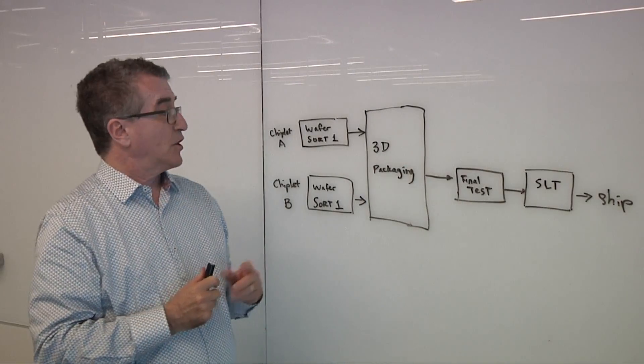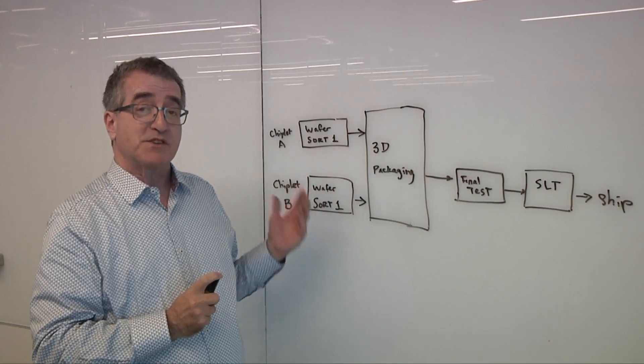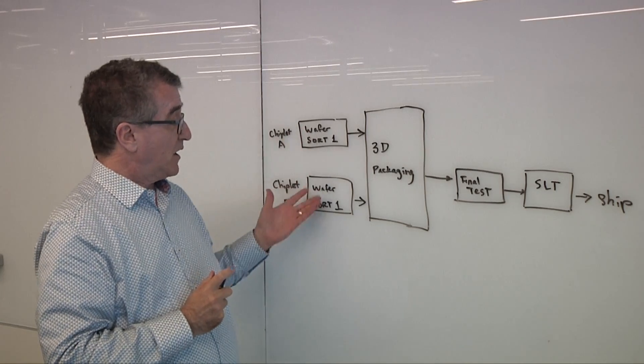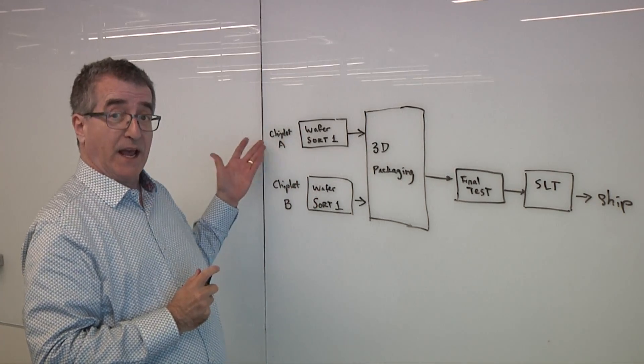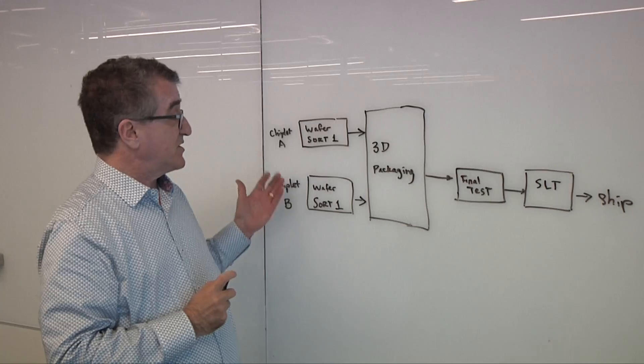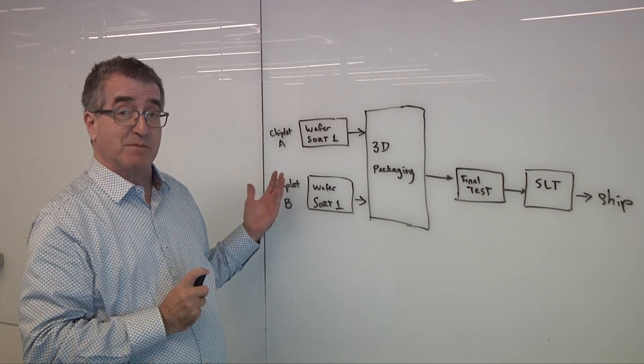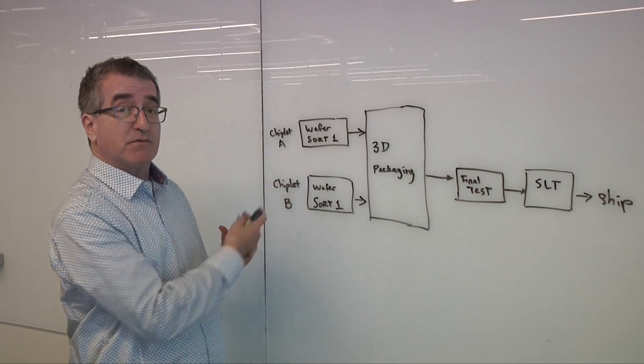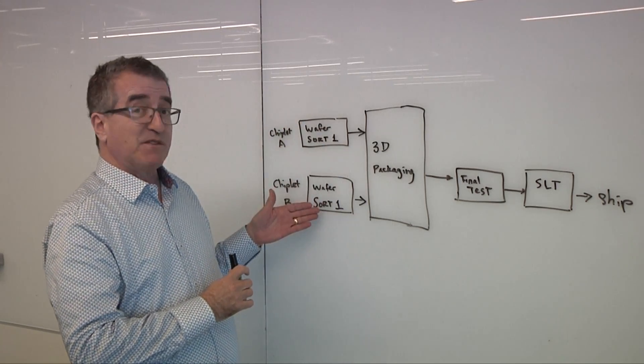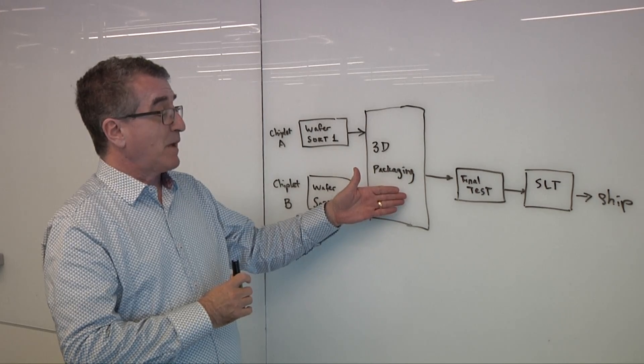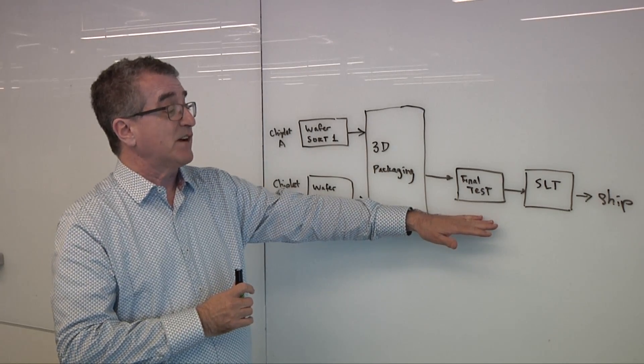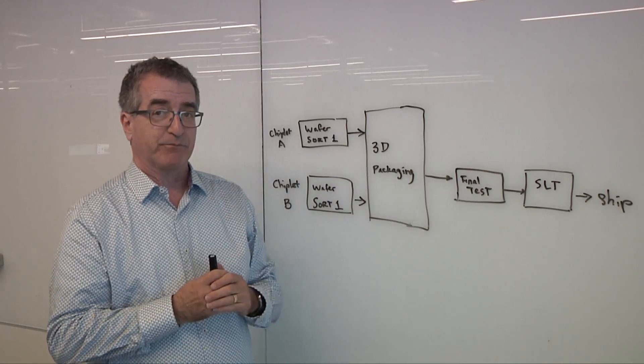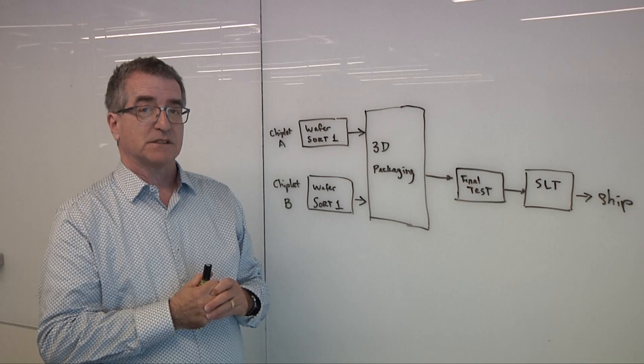Mark, what are we looking at? We're looking at a flow diagram simplified for a chiplet-based product, starting here on wafer sort for chiplet A and chiplet B. We have this for a two-chiplet solution to make the drawing simple. If you had a 4-chip or a 50-chip, it just goes vertically down the page. You do wafer sort. You put them into packaging. After packaging, there's a single device now. You do final test, system-level test, and shipment.